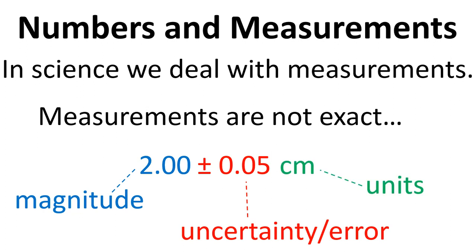So any measurement that we do in science needs to have a magnitude, so that's our 2.00. It needs to have a plus or minus uncertainty, sometimes referred to as the error, and we also need units.